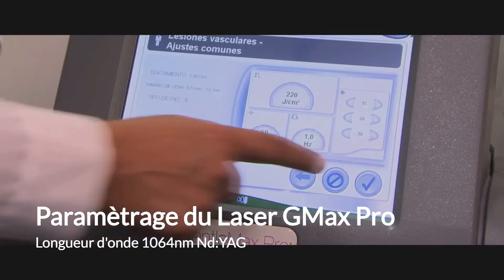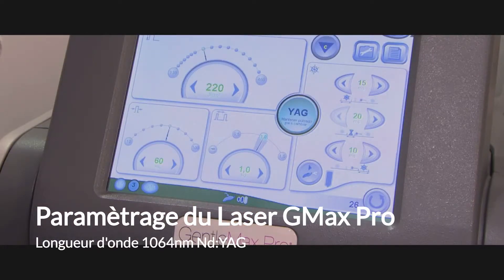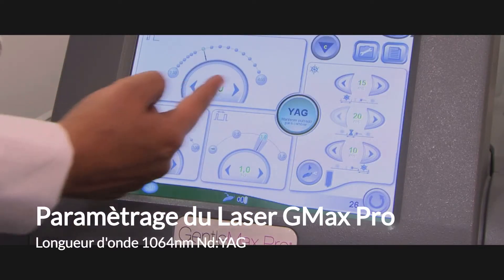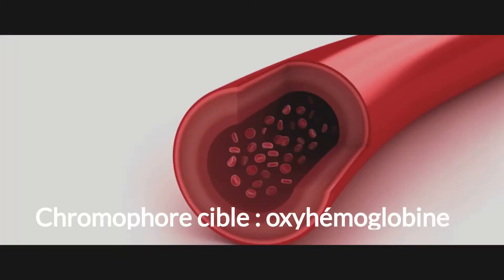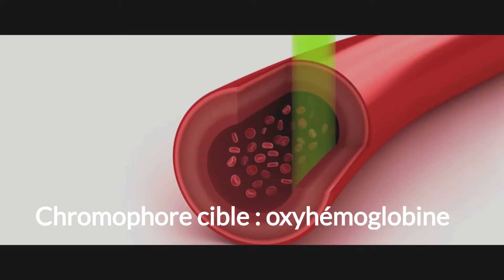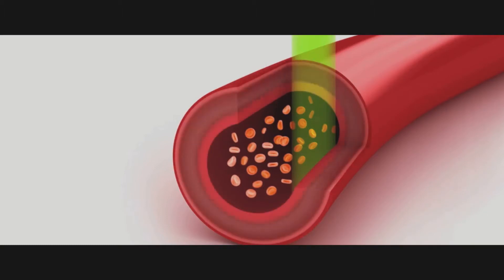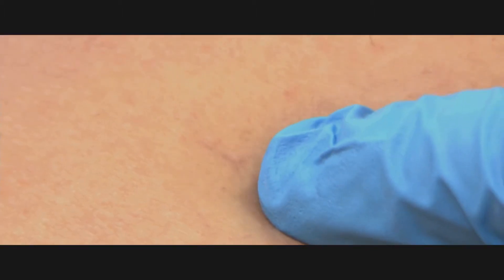Leg veins of up to three millimeters can be treated. The principal chromophores are oxyhemoglobin and deoxyhemoglobin in the red blood cells. These chromophores are targeted, resulting in the heating of the red blood cells. The heat subsequently diffuses to the vessel wall, which is damaged and collapses upon itself.